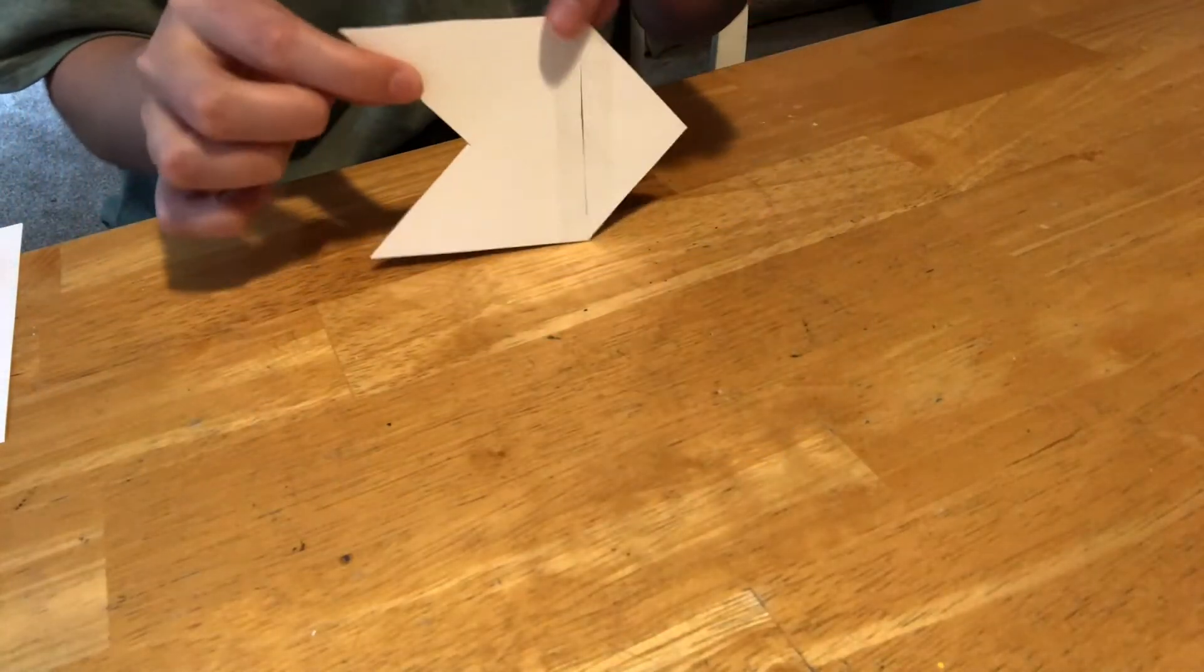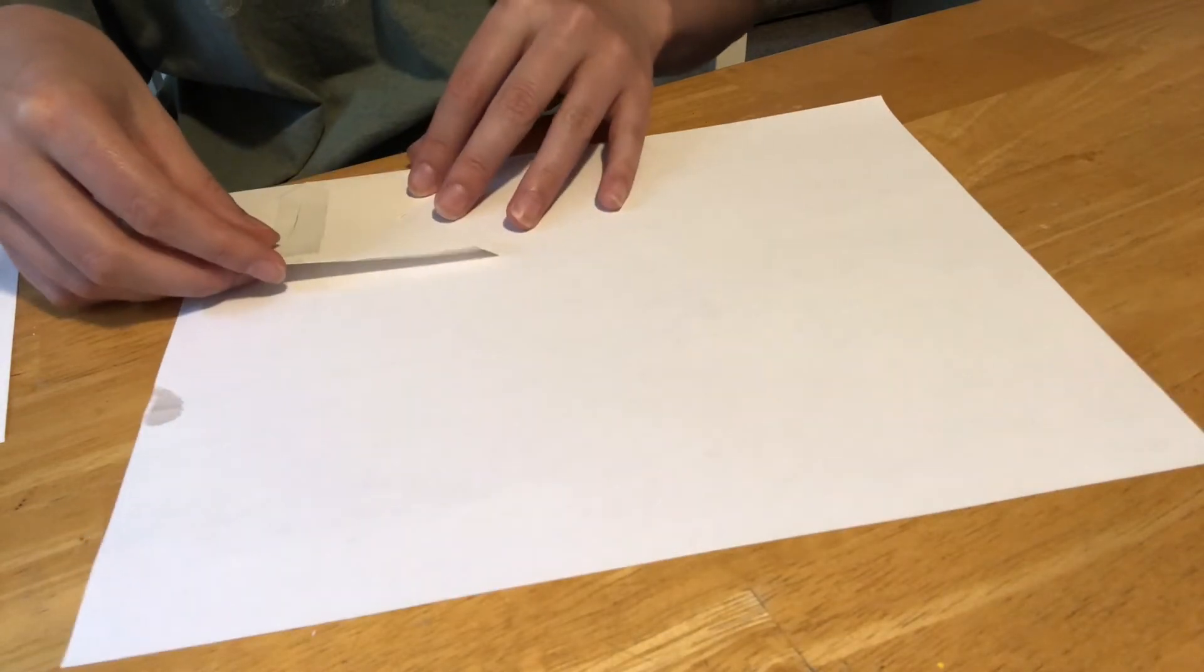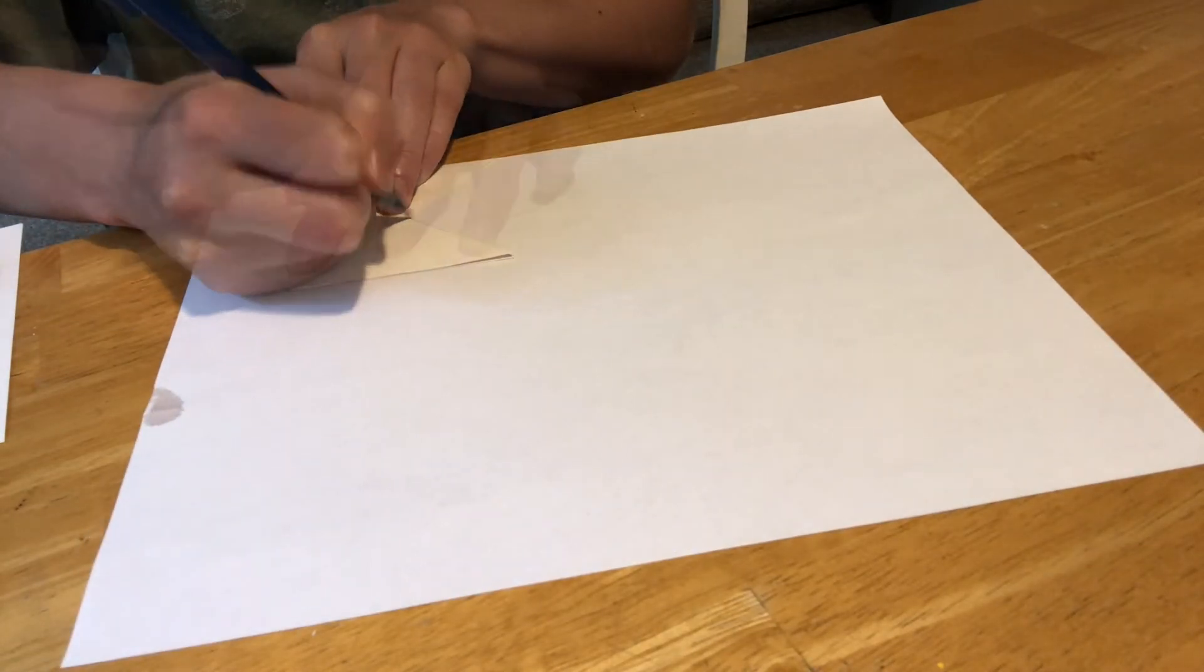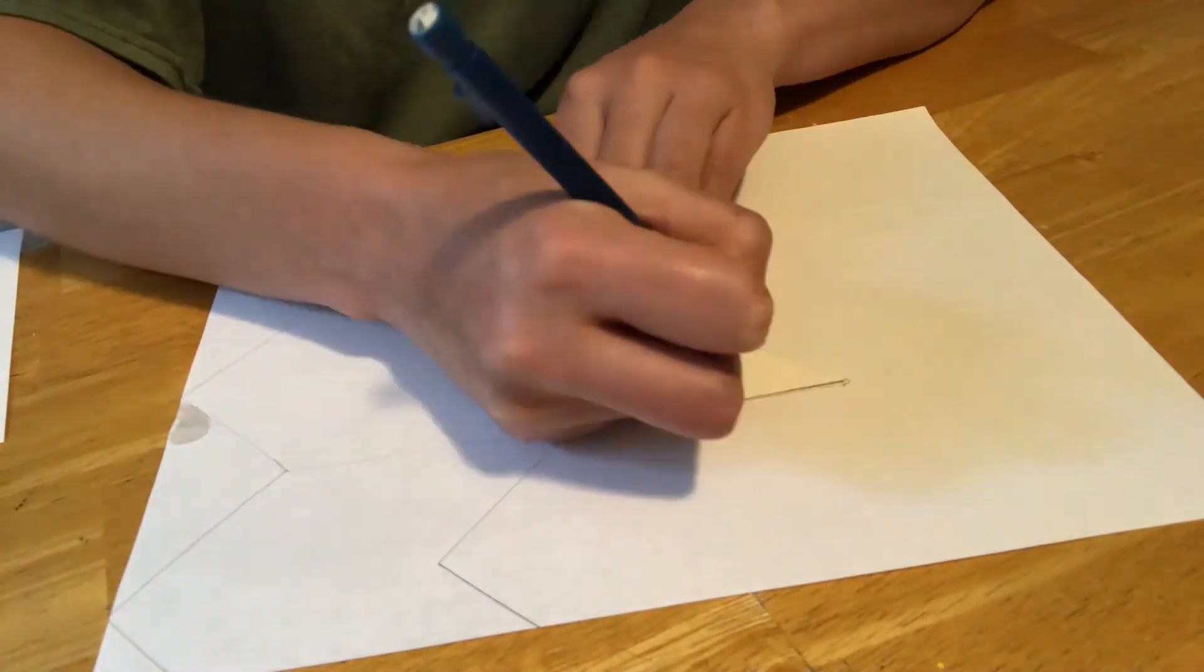Now you have a new shape that you can trace. Starting at one corner of your blank piece of paper, trace your new shape. Then figure out how the shape fits together with itself and keep tracing it until you fill up the entire piece of paper.